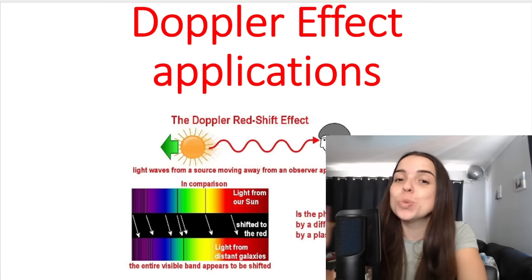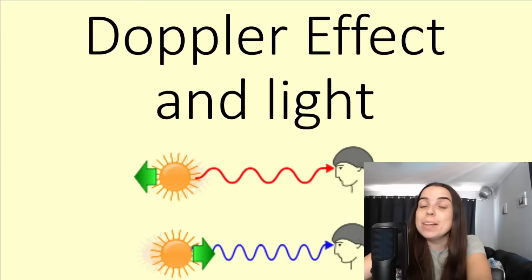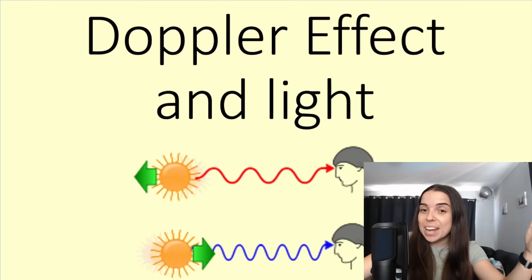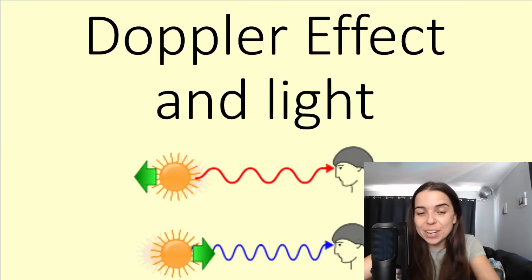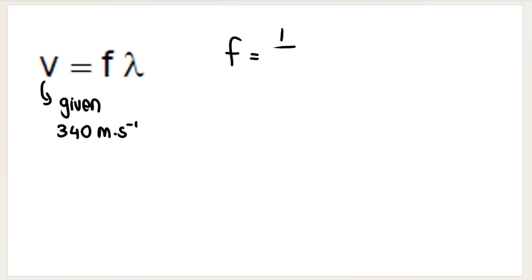The Doppler effect has lots of different applications which we will look at. It can also be observed in light waves, which we'll cover in more detail in another video. The formula from the formula sheet is v = fλ. Speed of sound in air is usually given at around 340 meters per second. Other formulas include f = 1/T and T = 1/f. And then there's the new Doppler effect formula.